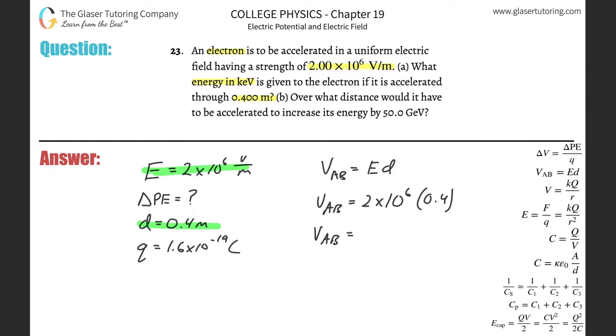And what do we get? Turn on the calculator, 2 times 10 to the sixth times 0.4. And this comes out to be about 800,000. So 8 times 10 to the fifth. And that's going to be in terms of volts.